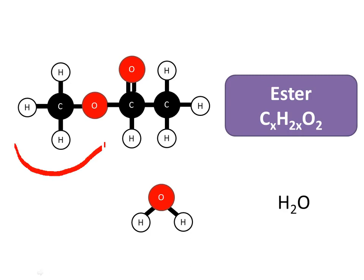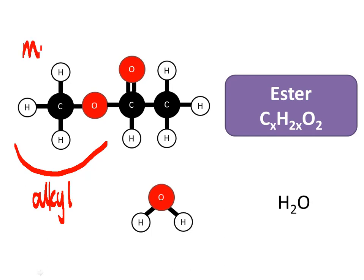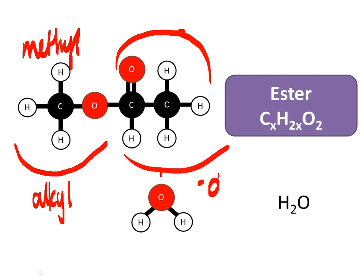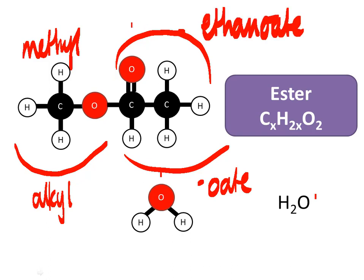The part that used to be the alcohol becomes the alkyl group in the ester — in this case it's methyl because there's only one carbon. The part that used to be the carboxylic acid becomes the oate part. Since there are two carbons, that is ethanoate. So this would be methyl ethanoate, and water is also produced.